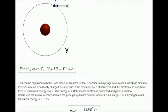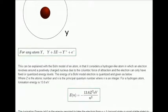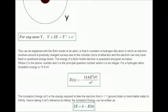This can be explained with the Bohr model of an atom, in that it considers a hydrogen-like atom in which an electron revolves around a positively charged nucleus due to the columbic force of attraction and the electron can only have fixed or quantized energy levels. The energy of a Bohr model electron is quantized and given as below where z is the atomic number and n is the principal quantum number where n is an integer.